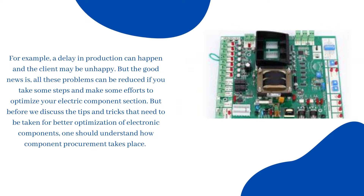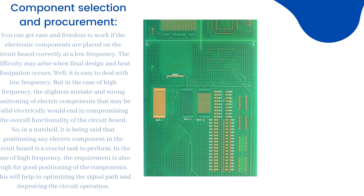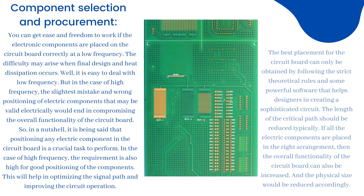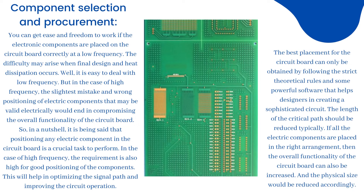But the good news is all these problems can be reduced if you take some steps and make efforts to optimize your electronic component selection. But before discussing the tips and tricks for better optimization of electronic components, one should understand how component procurement takes place. Component selection and procurement: you can get ease and freedom to work if the electronic components are placed on the circuit board correctly at a low frequency.